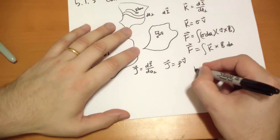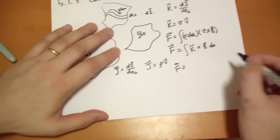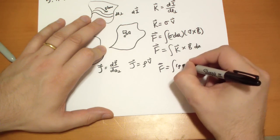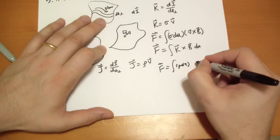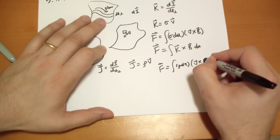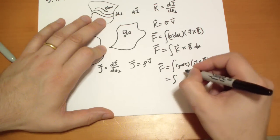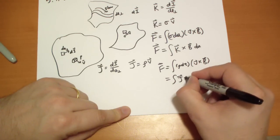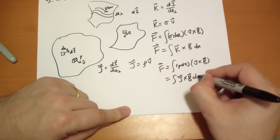And once again, we can use the force is equal to, well, how much charge? Rho d tau, q v cross b, so v vector cross v vector, and we can rewrite that as, well, rho v is just j vector, and what's left over? d tau.